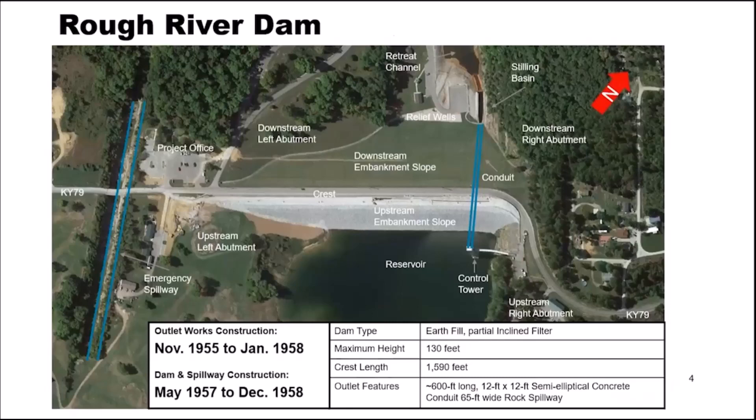We'll start out with a general overview of the dam. This is Rough River Dam. It's an earth-filled structure, approximately 1,600 feet long, 130 feet high, with a 40-foot crest width. The compacted earth embankment was constructed upon a cohesive alluvial foundation material that was left in place during construction. There is an inclined chimney that extends up to the summer pool elevation, about 60 feet below the dam crest, and an upstream and downstream filter blanket.